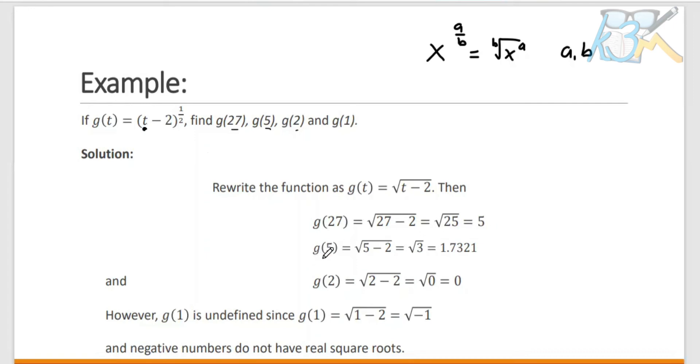For G of 5, we have square root of 5 minus 2, which equals the square root of 3, and the square root of 3 is 1.7321. And G of 2 equals 0. However, G of 1 is undefined since G of 1 equals the square root of negative 1, and negative numbers do not have real square roots.